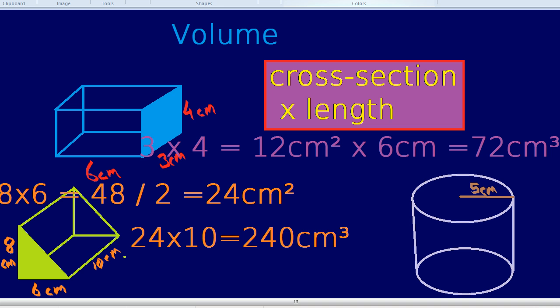The cross-section here would be the circle on top, because that runs all the way from the top to the bottom of the shape. All we need to do, therefore, is find the area of that cross-section, the area of that circle...